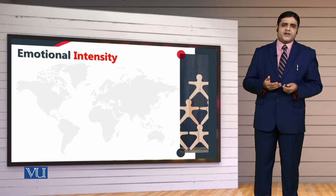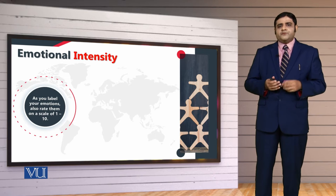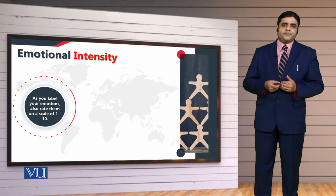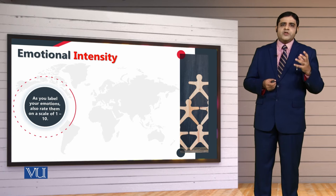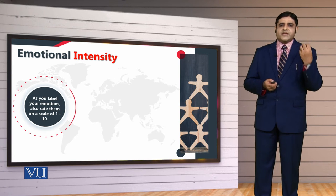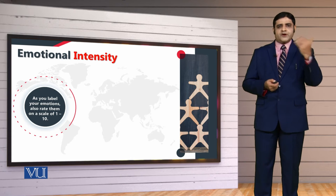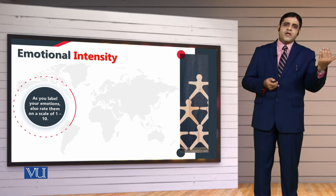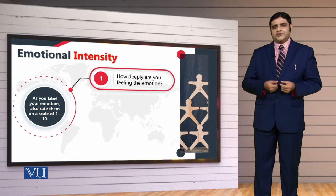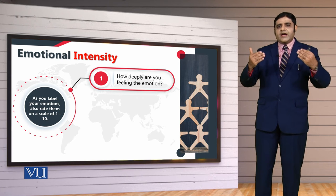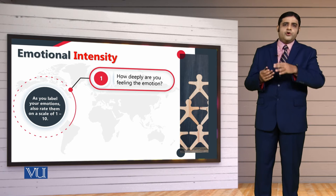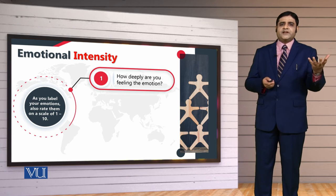This is a small practice or exercise you can do — calculate your rating, supposedly from one to ten. If you have any kind of emotional intensity, one would mean lesser and ten would mean most intense. So, how deeply are you feeling the emotion? You have to express yourself and feel yourself.